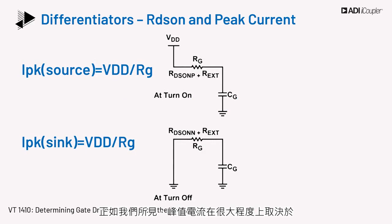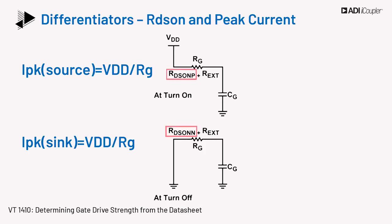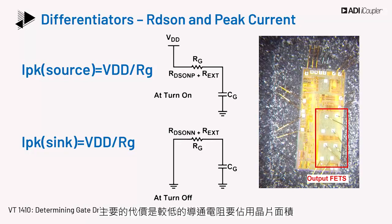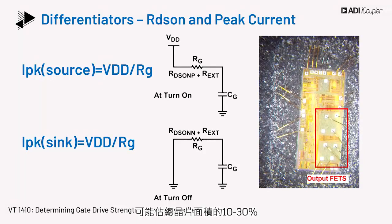As observed, the peak current is heavily dependent on the on-resistance of the NMOS and PMOS MOSFETs in the driver output stage. RDS on is therefore the true basis for peak current. Lower RDS on has benefits almost across the board for gate drivers. The main trade-off is that lower RDS on costs die area, since output FETs in a gate driver can be 10 to 30% of the total die area. Thus, ultimately there is a balancing act between drive strength and price.